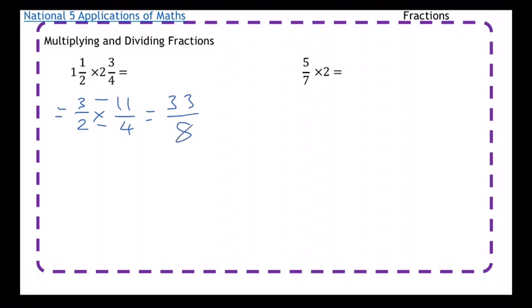You can leave your number as a top-heavy fraction, that's fine. If you are asked to change it back into a mixed number, you just do 8 divided by 33, so 8 into 3 doesn't go. 8 into 33 equals 4 times, with a remainder of 1. So the answer is 4 with your 1 remainder over 8.